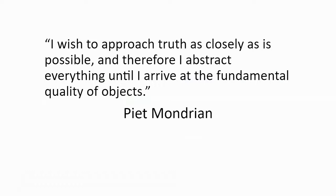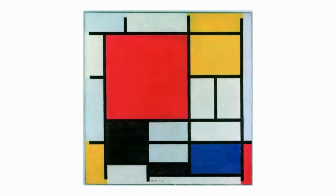So for Mondrian, he's trying to approach truth — not the truth of how many leaves are on that tree, but truth as in what does it feel like, what is the soul or spirit of this experience, of this moment, of this tree? He does that by abstracting everything he looks at until he arrives at what he considered the fundamental quality of objects. For Mondrian, the end of that investigation came out as artworks that had primary colors, geometric shapes, and lines without much else.